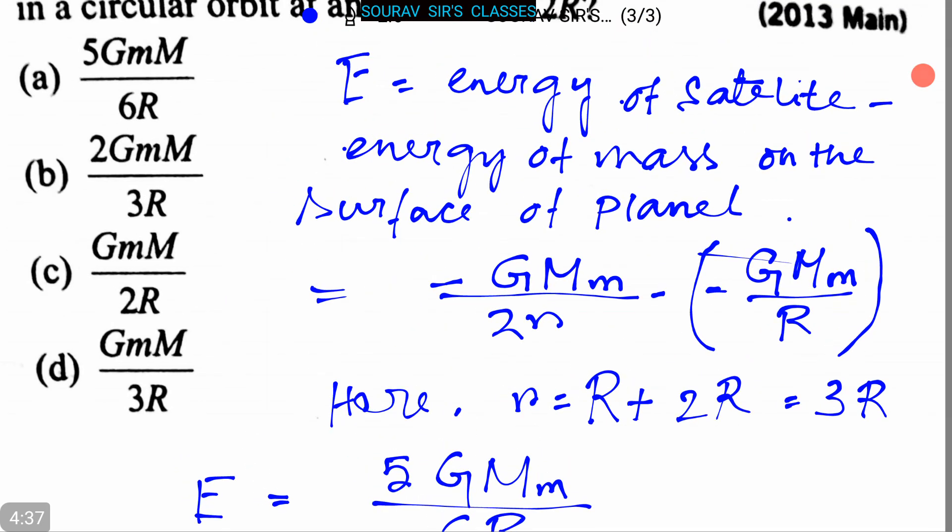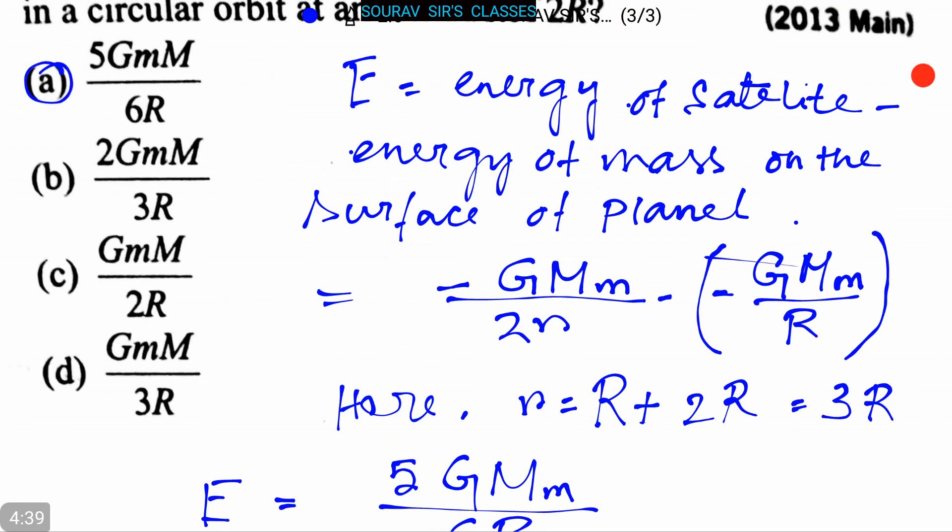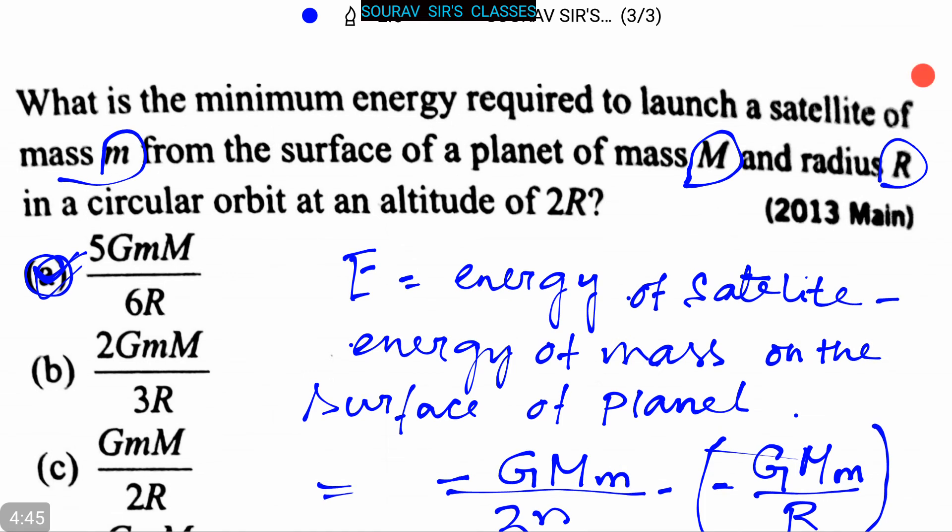So here option a, that is 5GMm divided by 6R, is our answer.